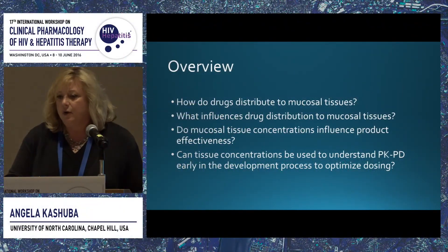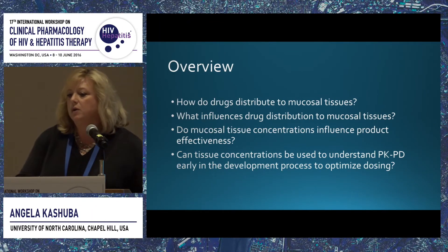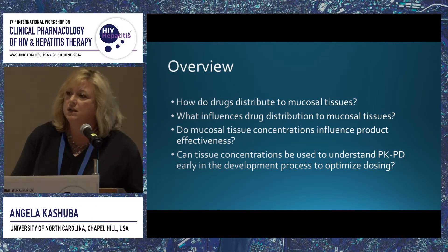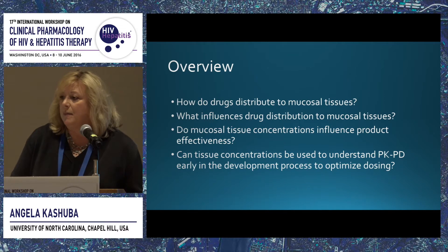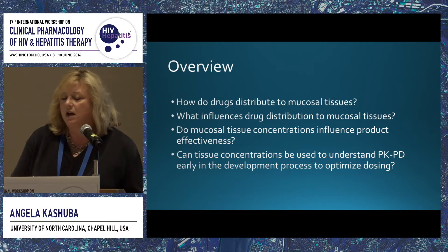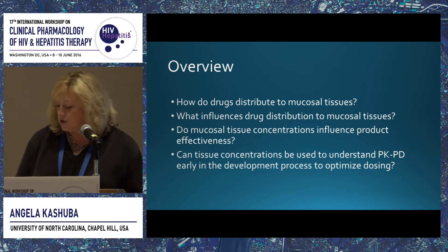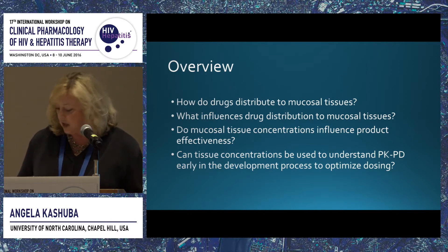What I'd like to cover are the following four points: first, how do drugs distribute into mucosal tissues, because that's what we're interested in for HIV prevention. Second, what influences drug distribution into mucosal tissues. Third, do tissue concentrations actually influence the effectiveness of prevention agents, and can tissue concentrations be used to understand PKPD early in the development process so that we can optimize therapy?